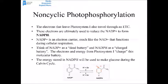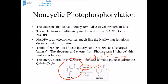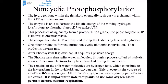The hydrogen ions within the thylakoid eventually rush out via a channel within an enzyme called ATP synthase. Because the gradient is so strong, these hydrogen ions rush out with a lot of kinetic energy, which the enzyme uses to phosphorylate ADP to make ATP. This process of using energy from a proton gradient to make ATP is called chemiosmosis. The energy from this ATP is used during the Calvin cycle to help make glucose.